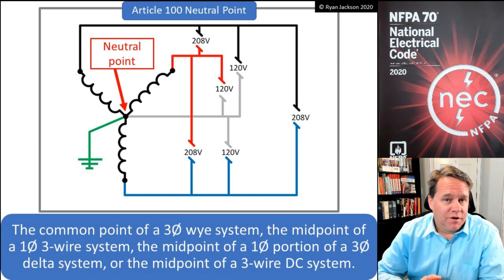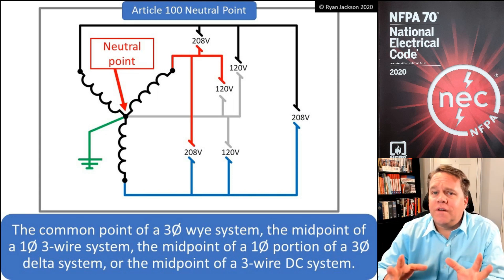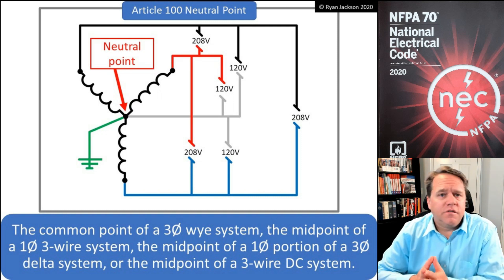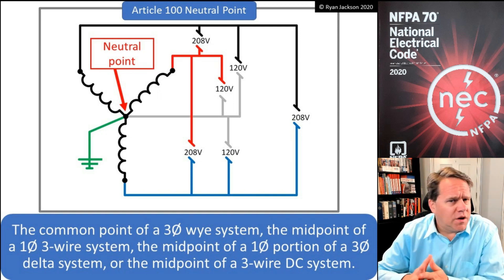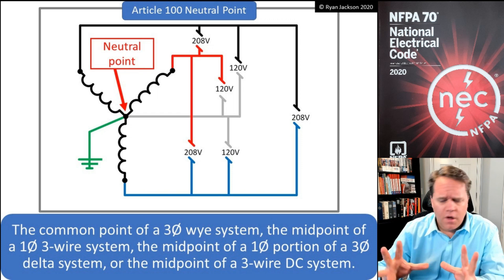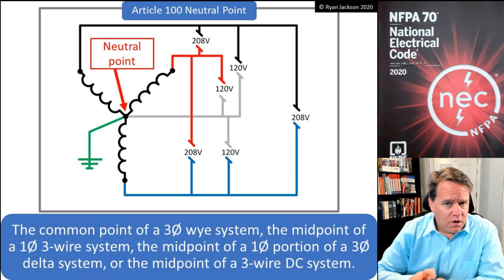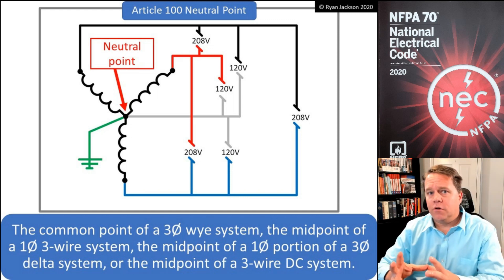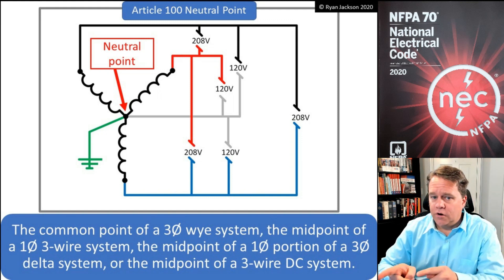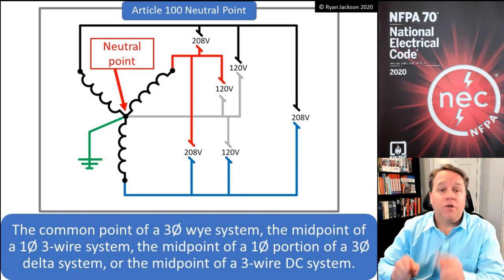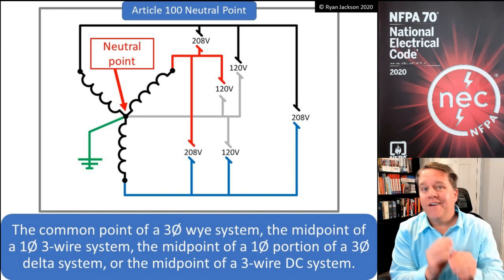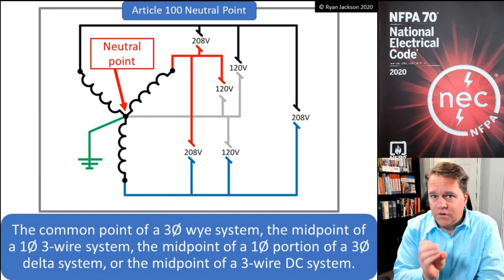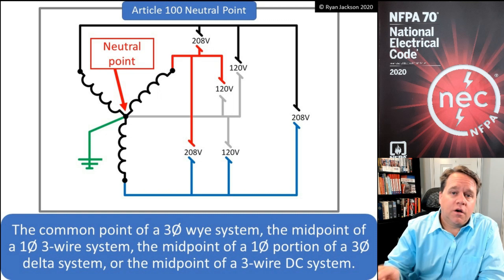We've used the term neutral conductor for decades in the NEC, but strangely enough it wasn't actually defined until the 2008 or perhaps the 2011 NEC. When they defined neutral conductor, they had to also make a definition for what we call neutral point, because it was impossible to define a neutral conductor without defining what it connects to under certain conditions. So let's start with neutral point and then talk about neutral conductor.